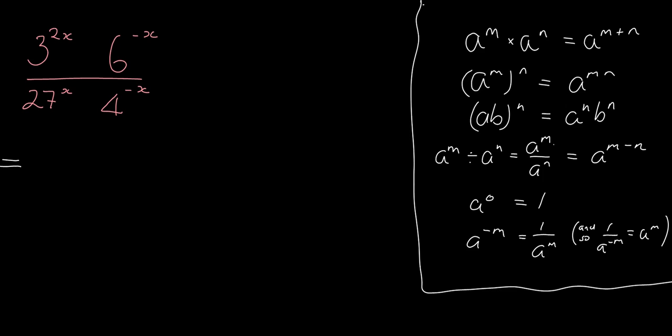We're going to try and write everything in terms of the same base. So 3 is nice and simple. We'll just leave it like that. But the 6 we are going to replace by 3 times, we're going to use that little central dot as the times sign.